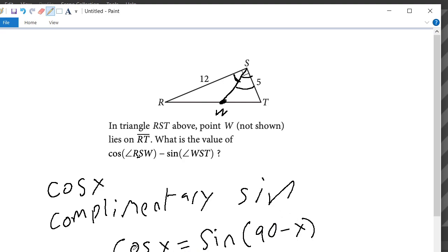And this works both ways. The cosine of X is equal to the sine of 90 minus X, just as the sine of X is equal to the cosine of 90 minus X.